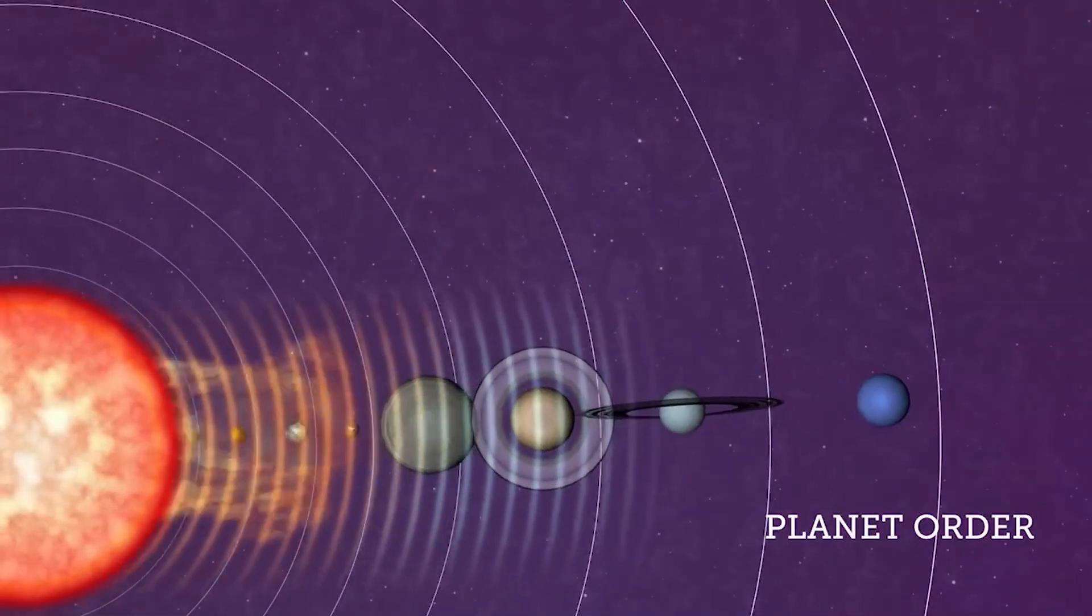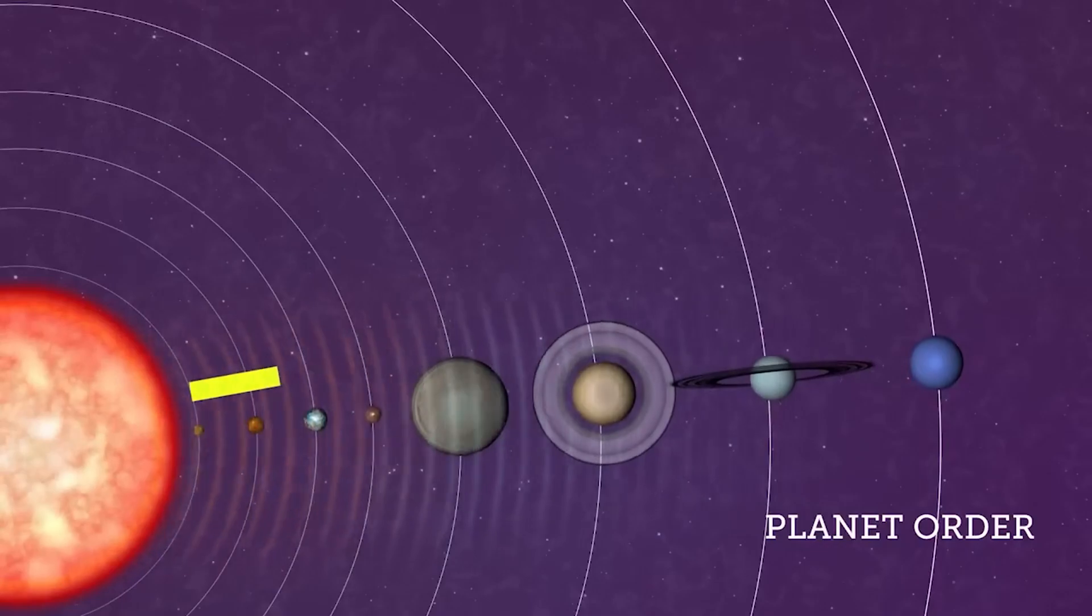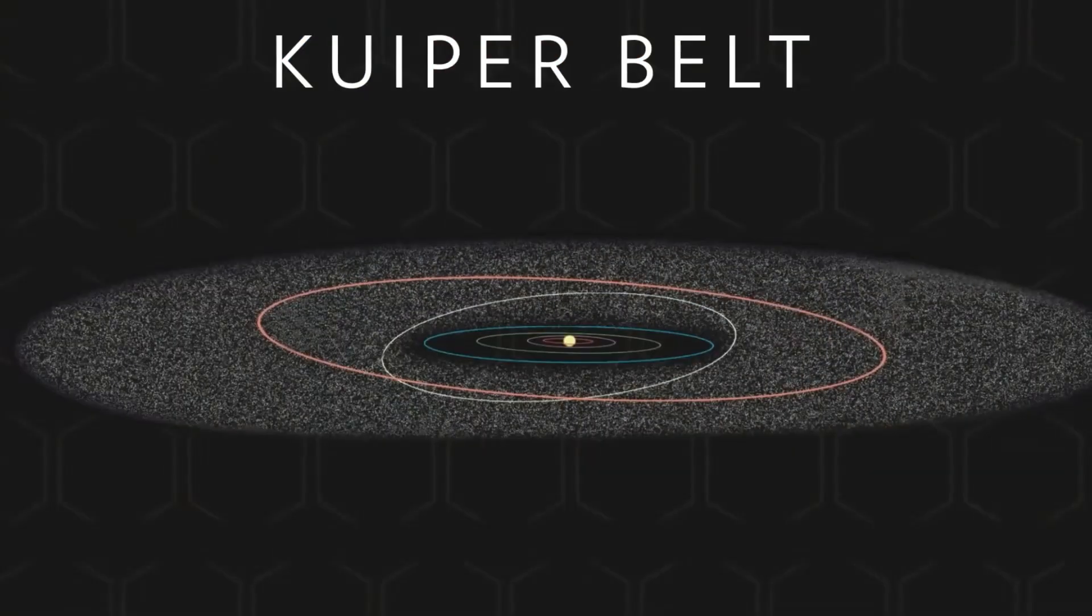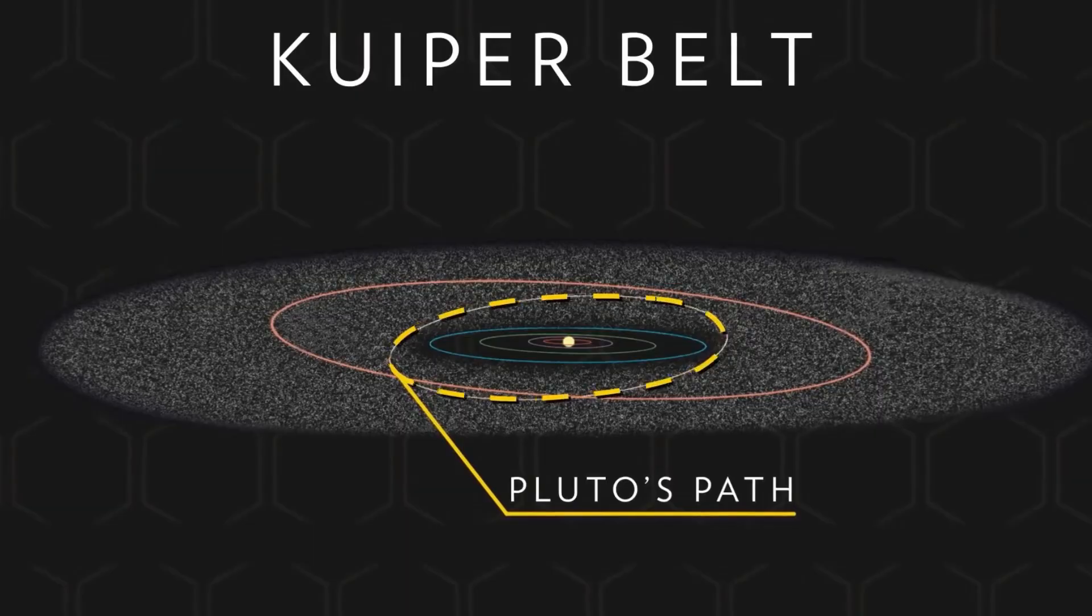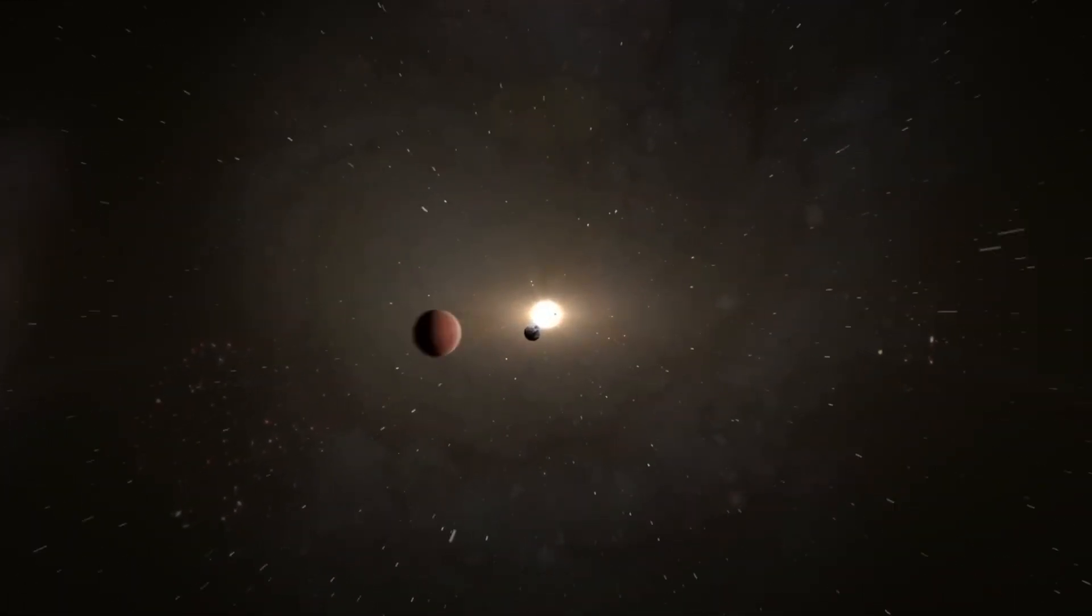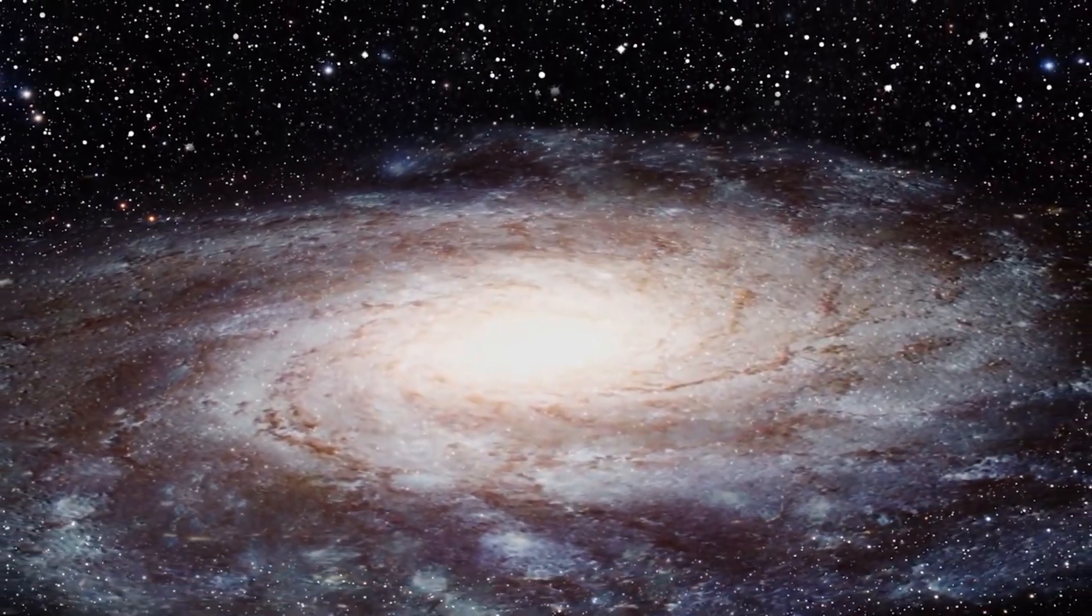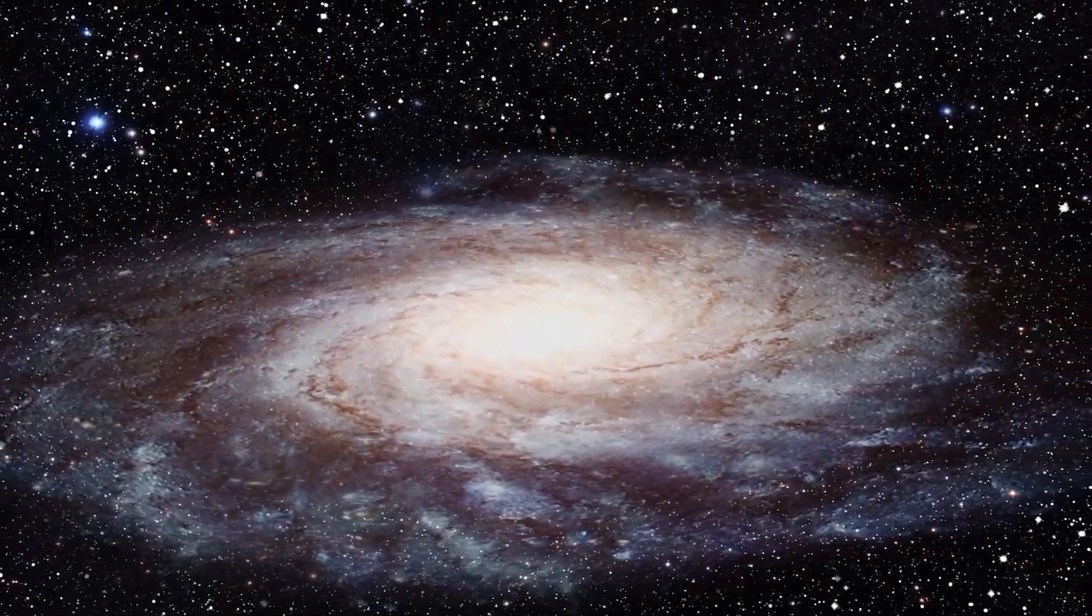As we explore the formation of planets and their alignment, we gain profound insights into the nature of gravity, the dynamics of collapsing gas clouds and the origins of celestial order. This cosmic story is not just about our solar system, but about the universal processes that shape planetary systems everywhere.